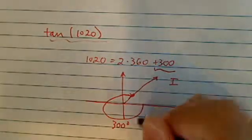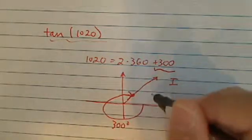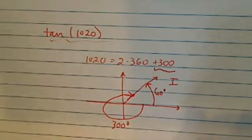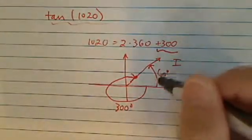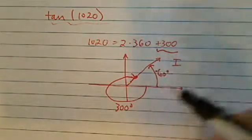Because when you're going around counterclockwise, you have 300, and what you have left here is 60 degrees. Now notice how I had to go clockwise to get 60, so this is literally minus 60.